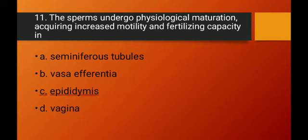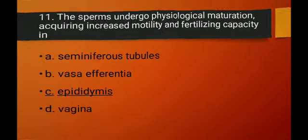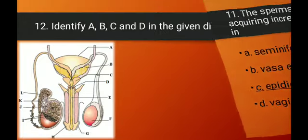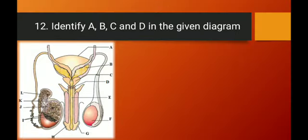Question number eleven: the sperms undergo physiological maturation, acquiring increased motility and fertilizing capacity, in which structure? Seminiferous tubules are where production takes place. Vasa efferentia transport sperms to the epididymis. The epididymis is where temporary storage and physiological maturation occur — sperms gain increased motility and fertilizing capacity there. Option C — epididymis — is the right answer.